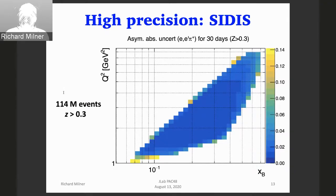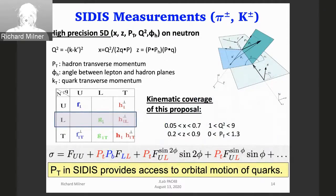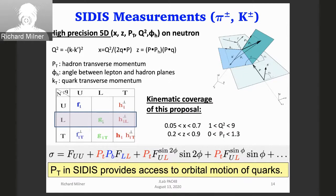The standard SIDIS kinematic variables are the scattering plane, hadron production plane, and the phi angle between them. This CLAS12 spectrometer has been designed to do high precision multi-variable SIDIS measurements in all these variables on the neutron. The kinematic coverage is x from 0.05 to 0.7, Q² from 1 to 9, Z from 0.2 to 0.9, and PT up to 0.3. The cross-section is expressed in the standard nomenclature of polarizations and beam and target structure functions labeled depending on polarizations, with the sine dependence added explicitly.